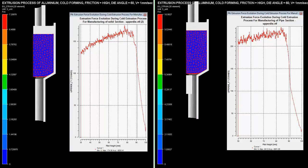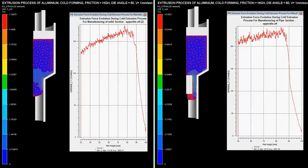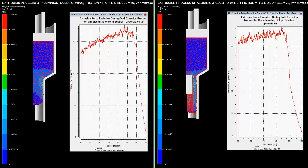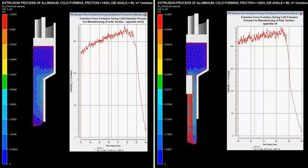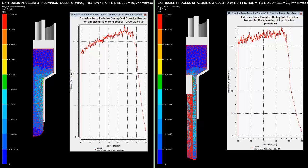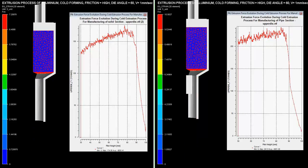On the left hand side of the section, solid shaft extrusion process is shown. For both processes, the ram velocity is set as 1 mm per second. The die angle is specified as 60 degrees and high friction during this cold extrusion process is maintained.